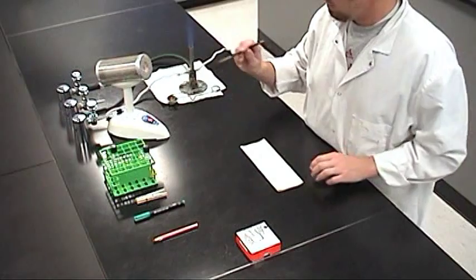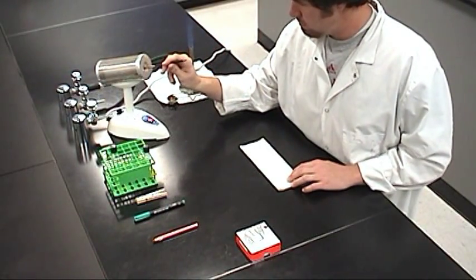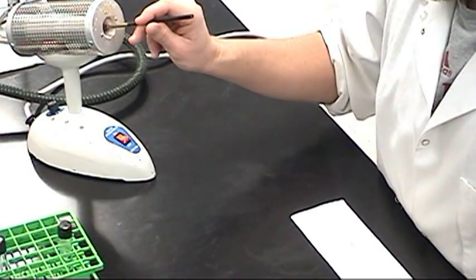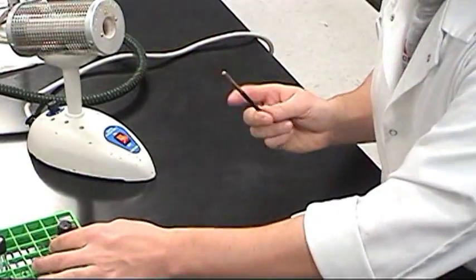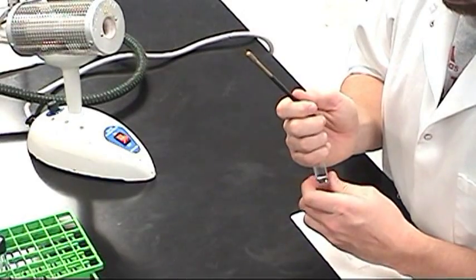To take a sample, flame the loop for at least five seconds to sterilize it. With one hand, hold the loop and grip the test tube cap with your little finger. Use your other hand to unscrew the tube from its cap.